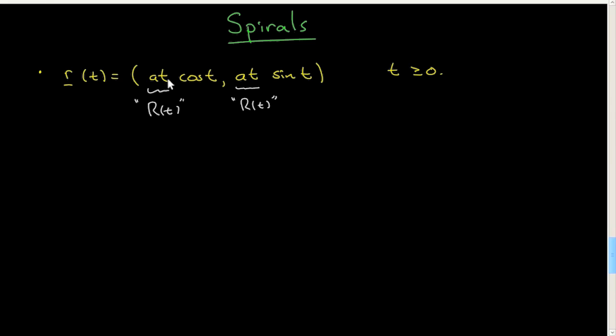That is to say, if this were just a constant, this would describe a circle being traced in the counterclockwise direction. There's a counterclockwise rotation due to this cosine and sine term, but then there's the radius which here is not constant. In this case, the radius term is simply equal to a t.